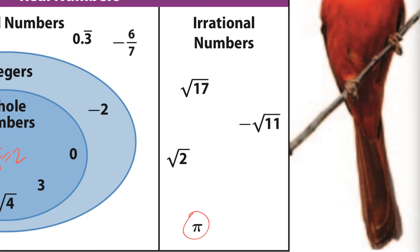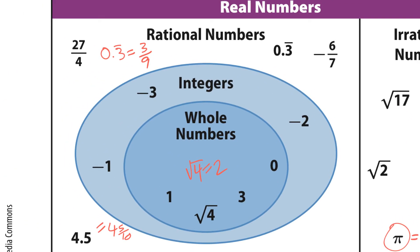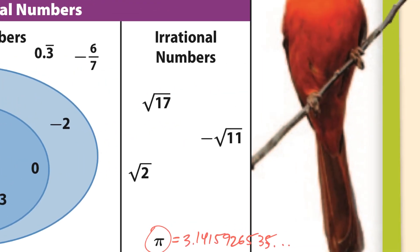When you look at the decimal version of irrational numbers, there's no pattern — it's non-terminating and non-repeating. On the rational side, decimals either terminate, like 4.5, or have a repeating pattern, like 0.3 repeating, so you know what the next digit is. But with irrational numbers you have no idea what the next digit in the decimal is going to be — they're irrational.